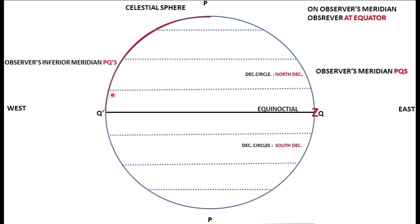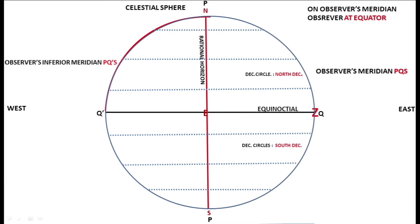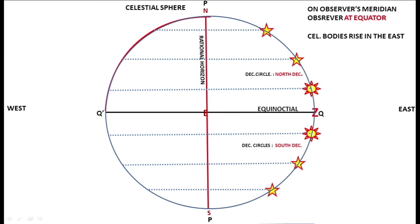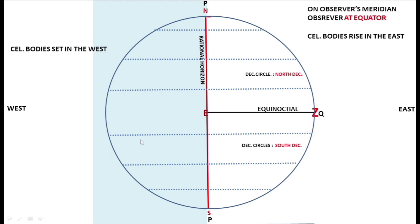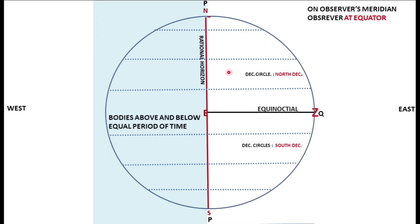PQ and P' here is the observer's meridian because the observer is here. The one which is 180 degrees opposite is the observer's inferior meridian. Now if the observer is here, the rational horizon would appear like this — all points 90 degrees from the zenith. This is the north-east-south-west of the rational horizon. We see that the apparent motion of all bodies is that they rise on the east, come on our meridian, and then set in the west. When the observer is on the equator, all bodies are above and below the rational horizon for equal periods of time.